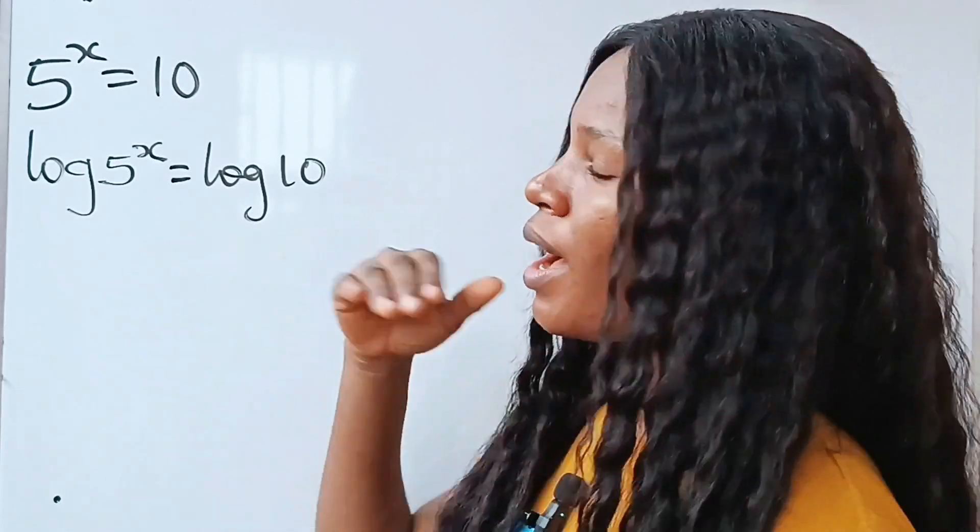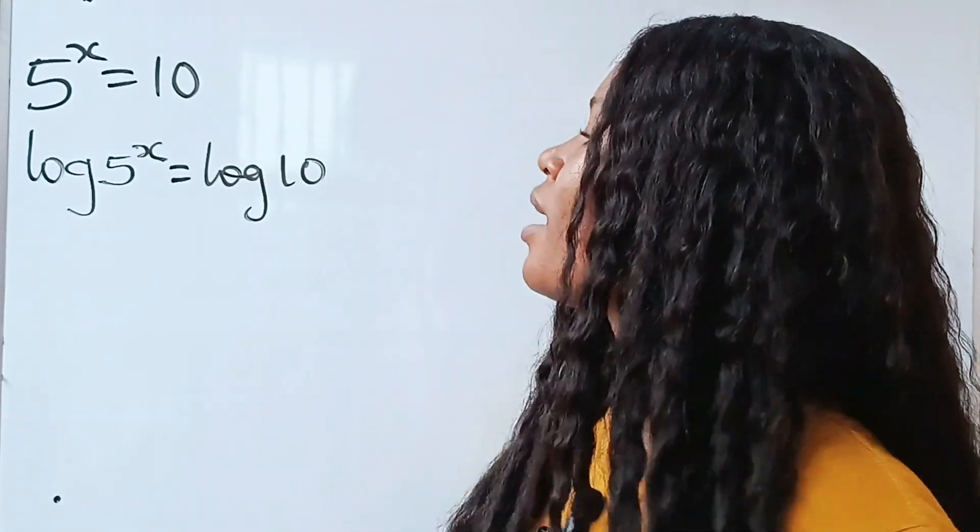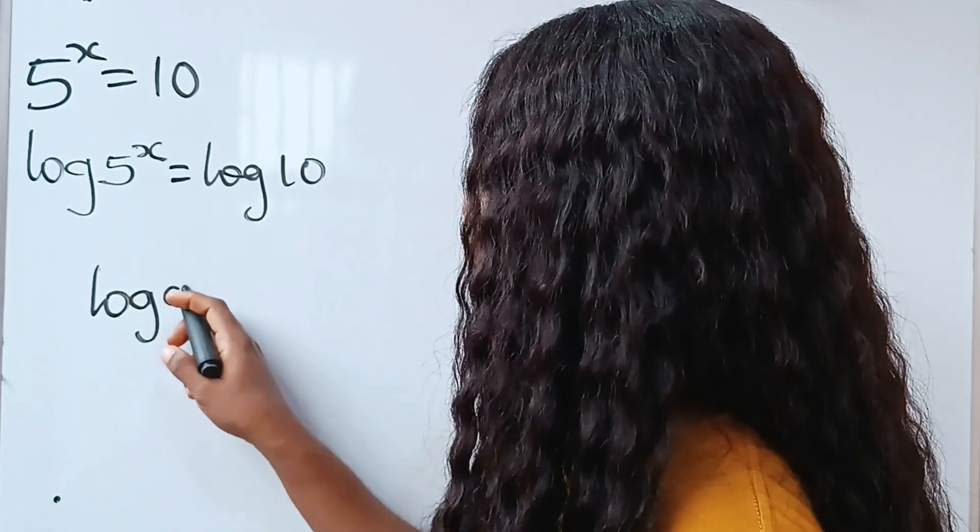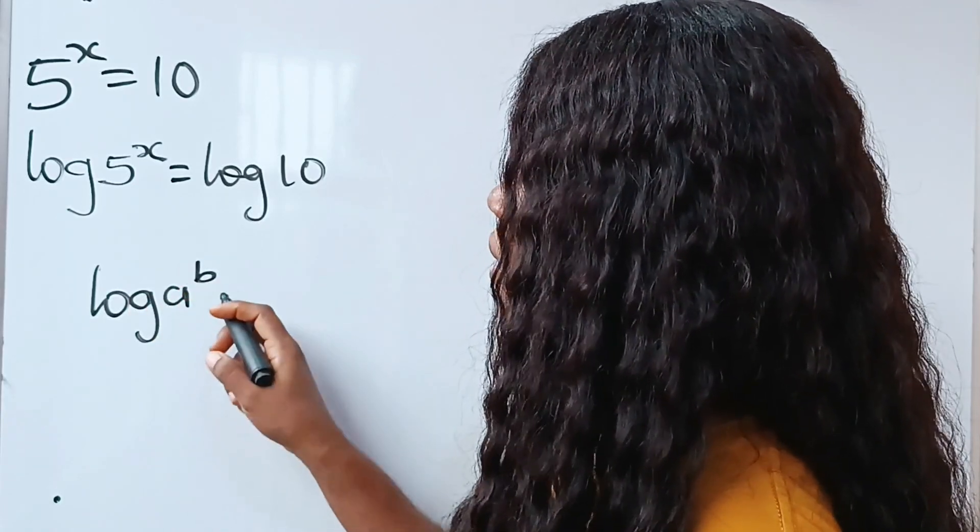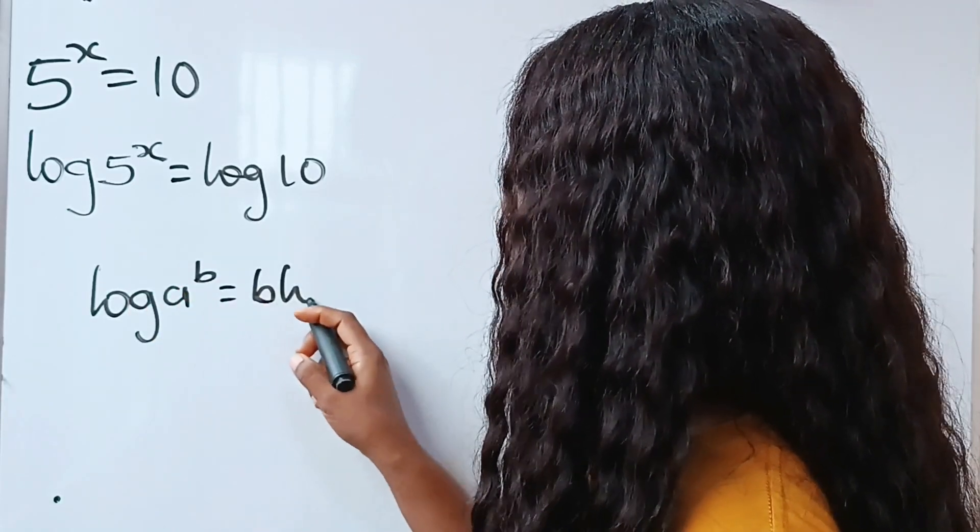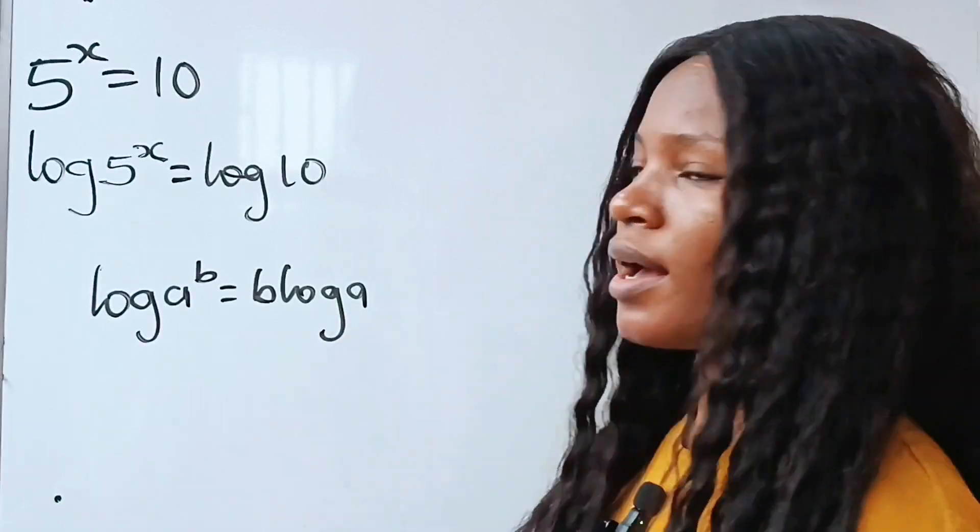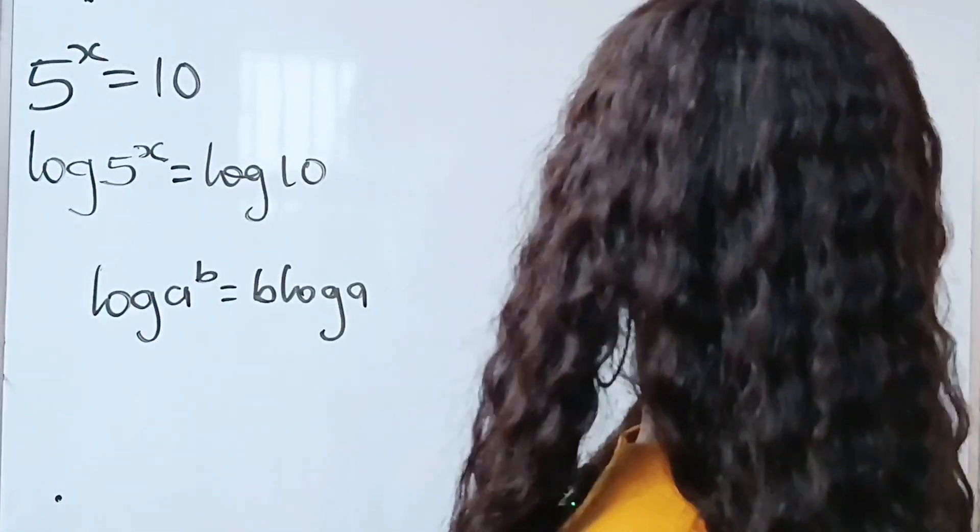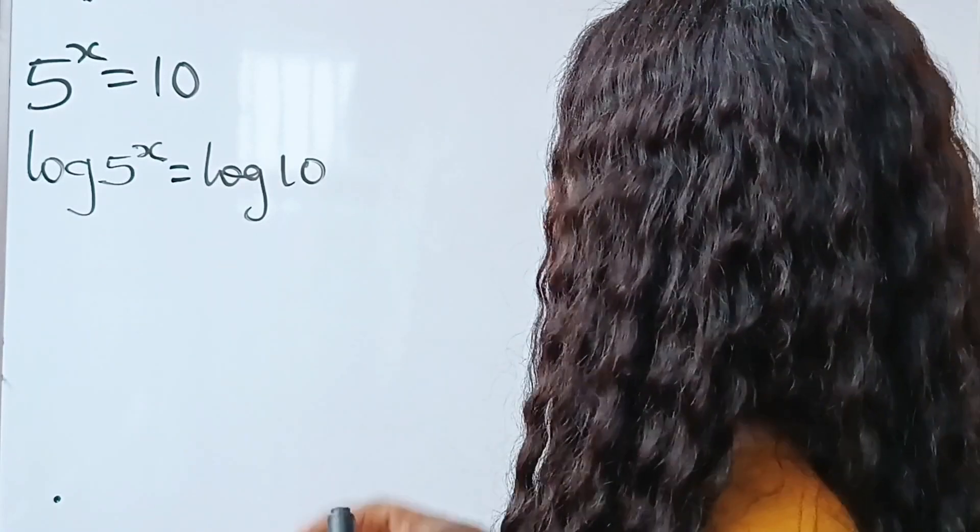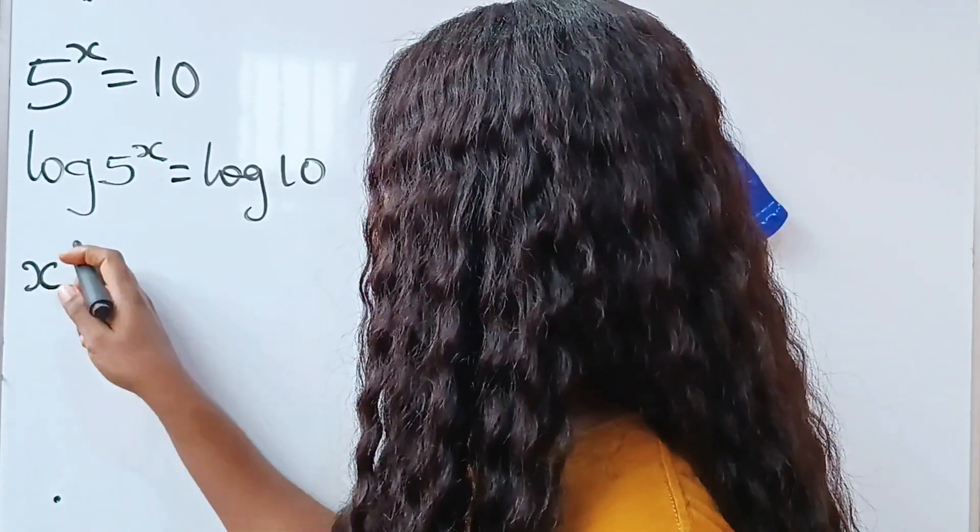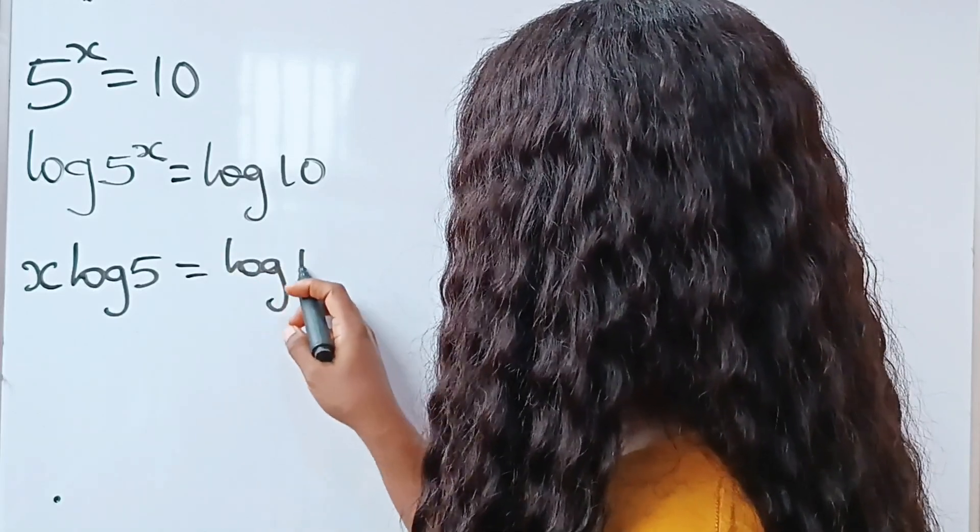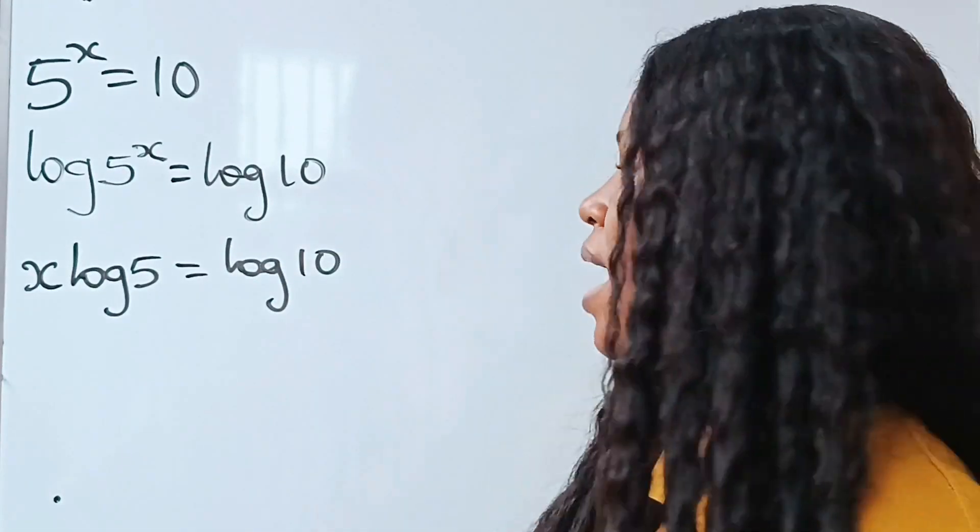Now, look at what we have. Note that log a to the power of b is equal to b multiplied by log a. So this b can come down to multiply our log a. Let's go ahead and solve that. That means this is x log 5 is equal to log 10.